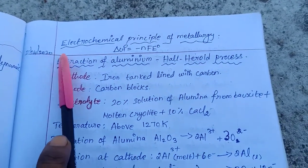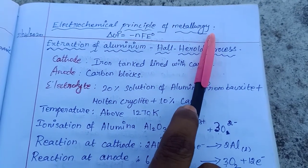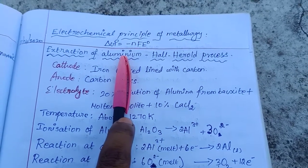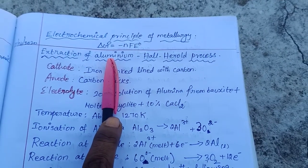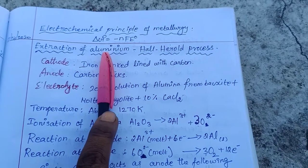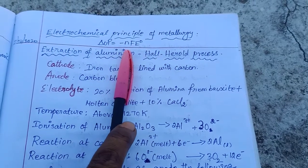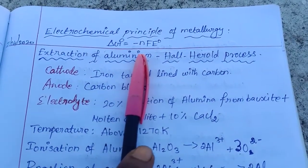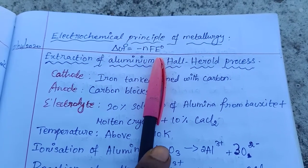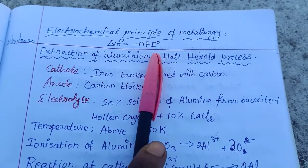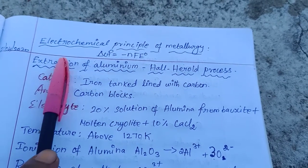Good evening students, today we will see the electrochemical principle of metallurgy. Yesterday we saw the thermodynamic principle of metallurgy. For some metals, reduction of oxides is thermodynamically not feasible, so we will use the electrochemical principle of metallurgy. The formula is ΔG° = -nFE°, where n is the number of electrons transferred, F is the Faraday constant, and E° is the electrode potential in the redox reaction.